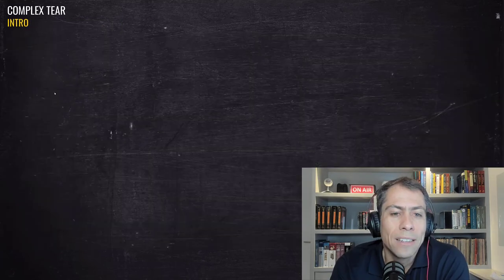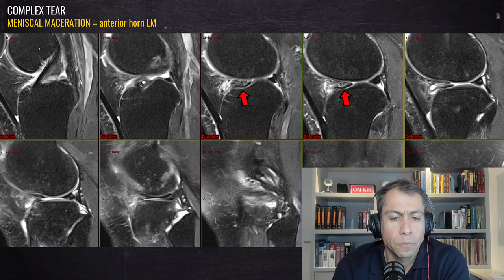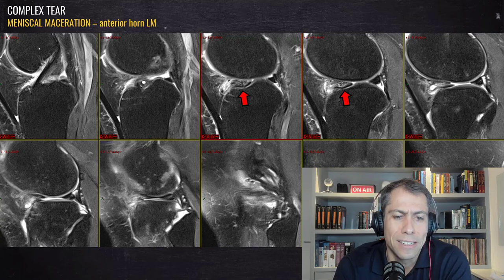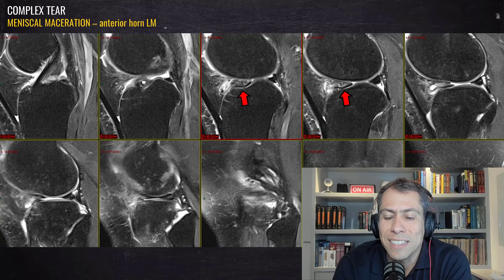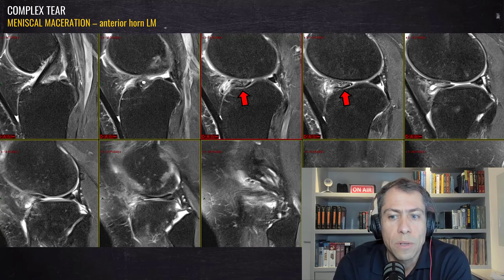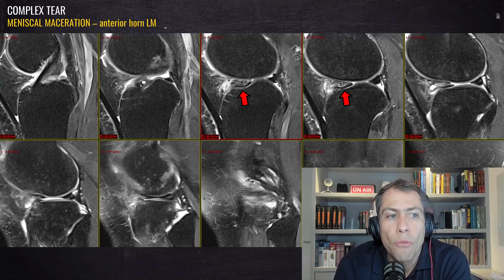In the third example, I'd like to show an example of meniscal maceration. Sometimes it's hard to differentiate between a complex tear and a meniscal maceration, but the basic point is this: in meniscal maceration it's difficult to identify the meniscal margins, it's difficult to identify the meniscal morphology, and it's also difficult to identify the patterns of meniscal tear.